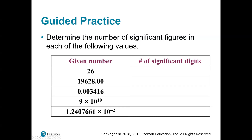Let's do a little practice with significant figures. Our first number is 26. Any non-zero number is a significant digit, so since those are the only two digits, we have two significant digits. For the second number, zeros at the end generally do not count, but if we see a decimal point, numbers after it count if preceded by a non-zero number. All five digits before the decimal are significant, plus two after — a total of seven significant digits.